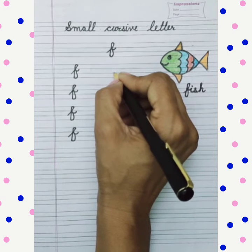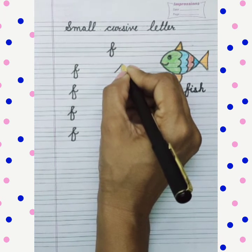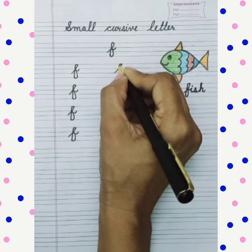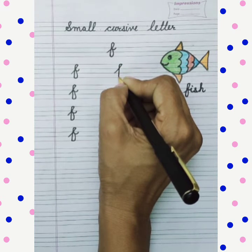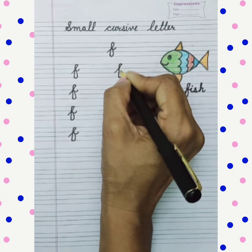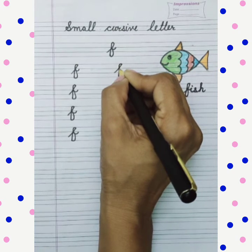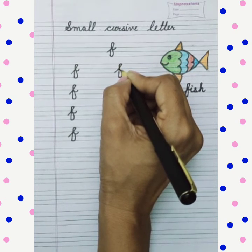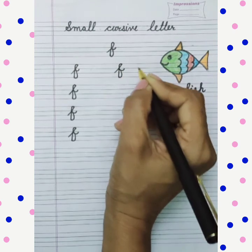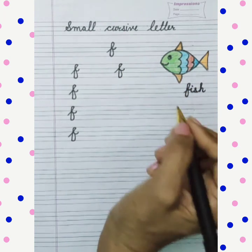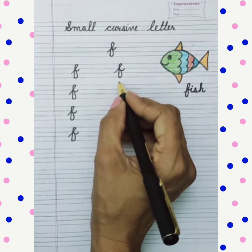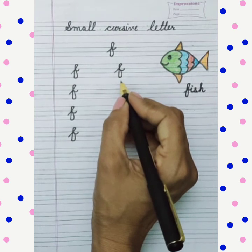Make a big slash. Touch the first line. Make a loop. Come down. Touch the last line. Make a curve, touch the midpoint, and go out. F for fish. Small cursive letter F.